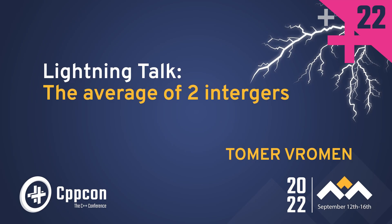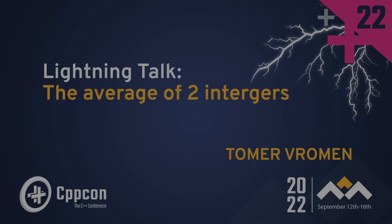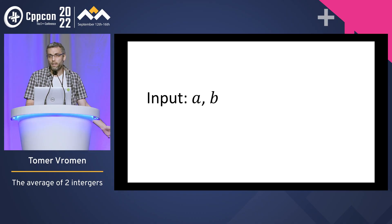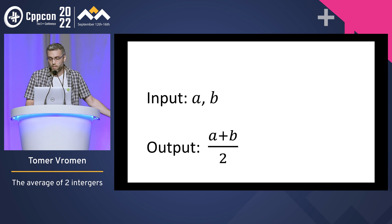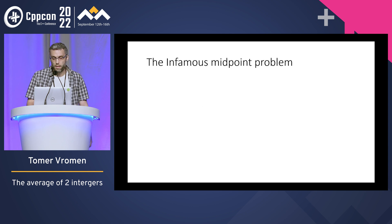Today I'm going to talk about finding the average of two integers. That's when you have input A and B, and the output is the sum divided by two — like we learned in math.